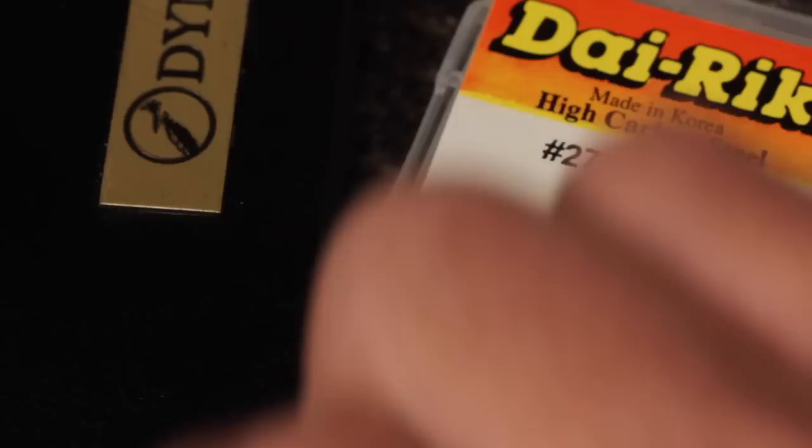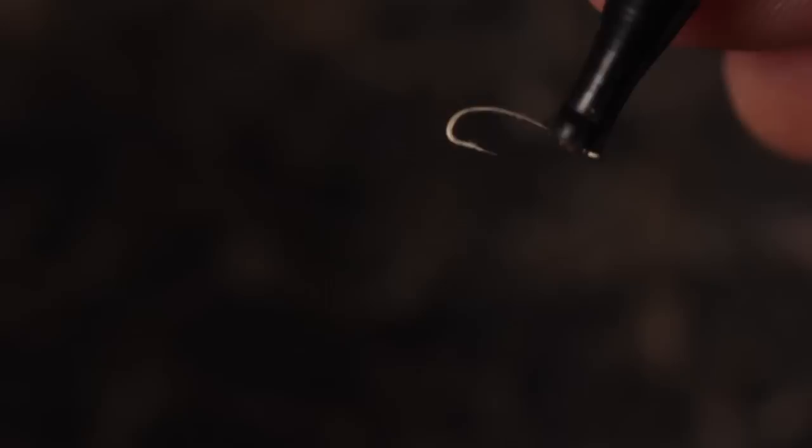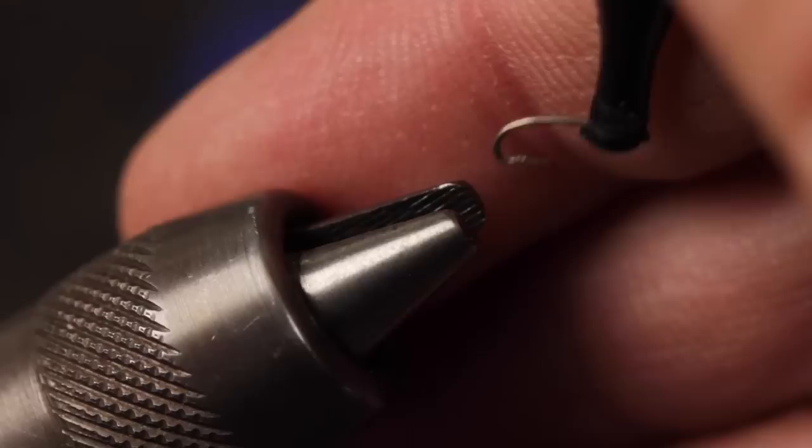As when handling almost all small hooks, easy hackle pliers make the job much easier. If you don't already do it as a habit, seriously consider mashing the barb on the hook before securing it in your tying vise. It's easy to do and takes just a couple of seconds.